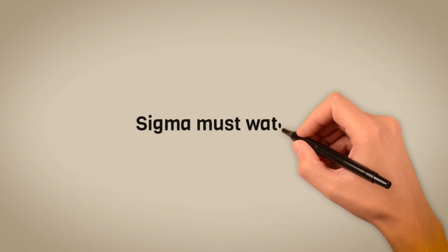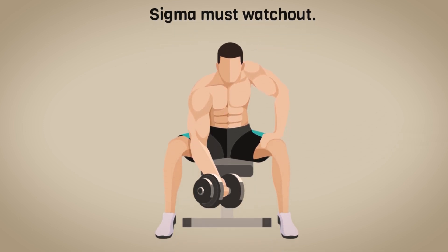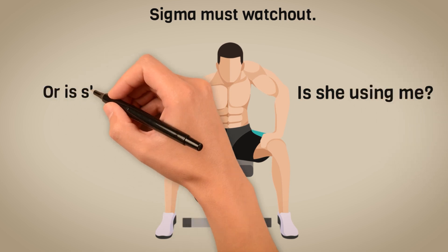A sigma male must look out for signs that prove that his woman is just there to use him, drawing him in with her enticing charms just for the sole purpose of destruction. Here are what she does when she's using a sigma male.